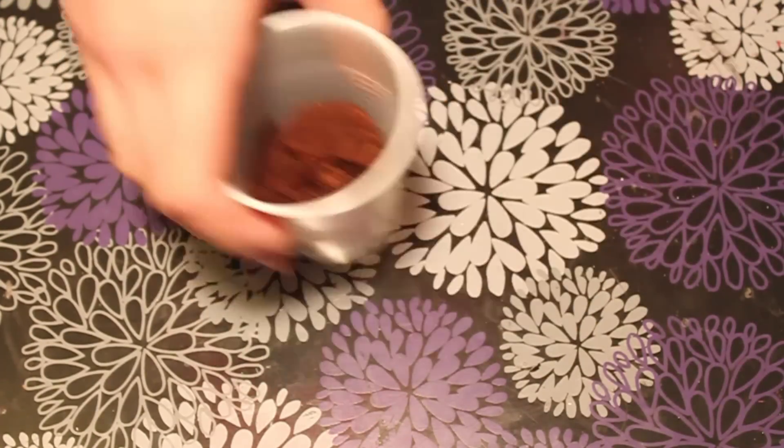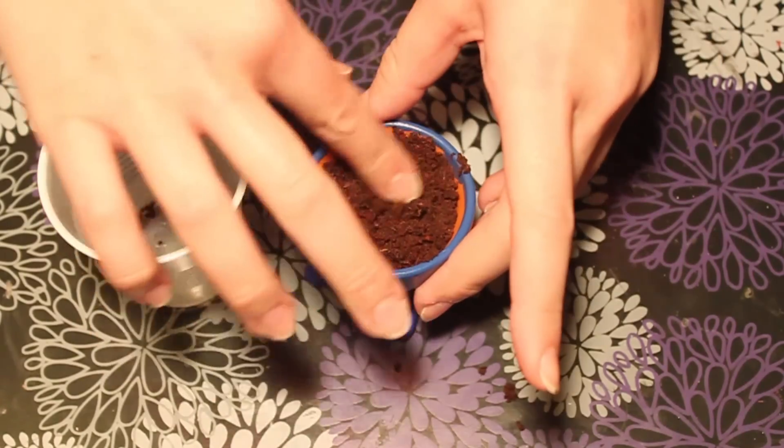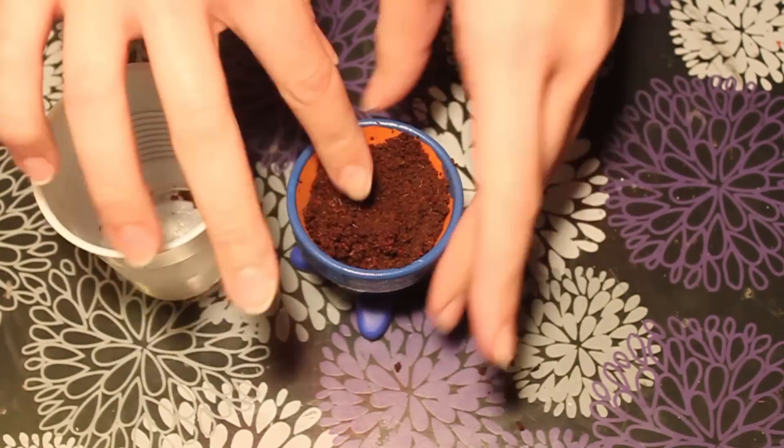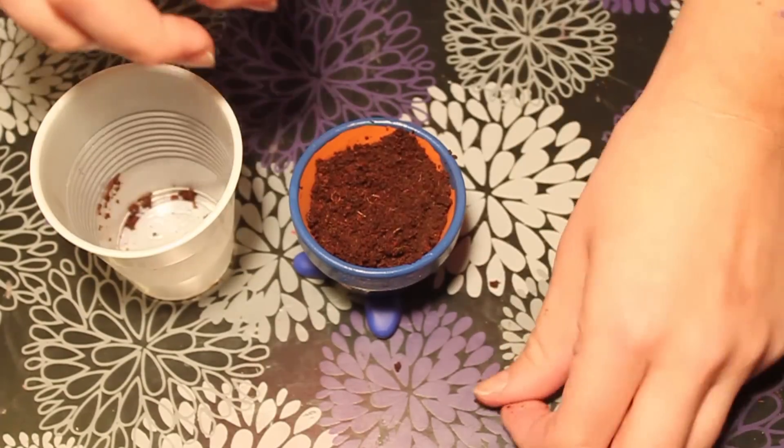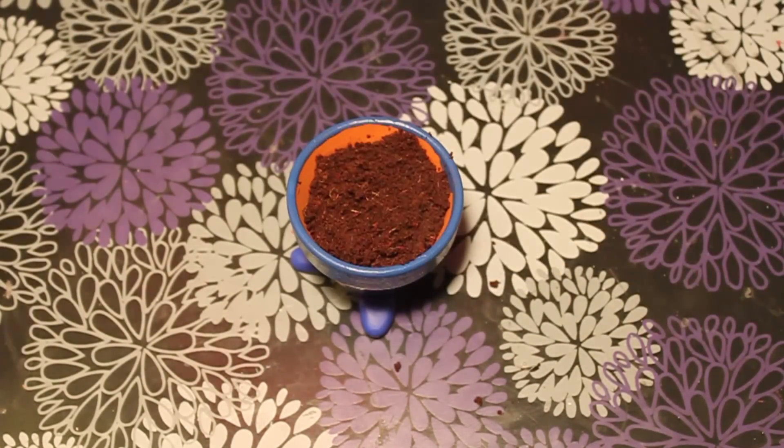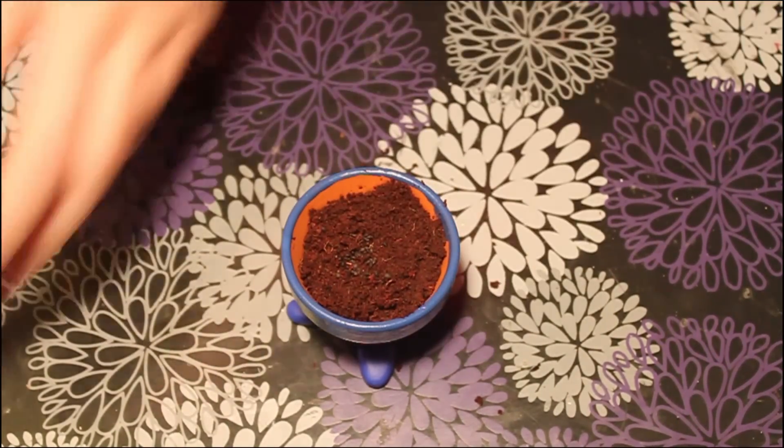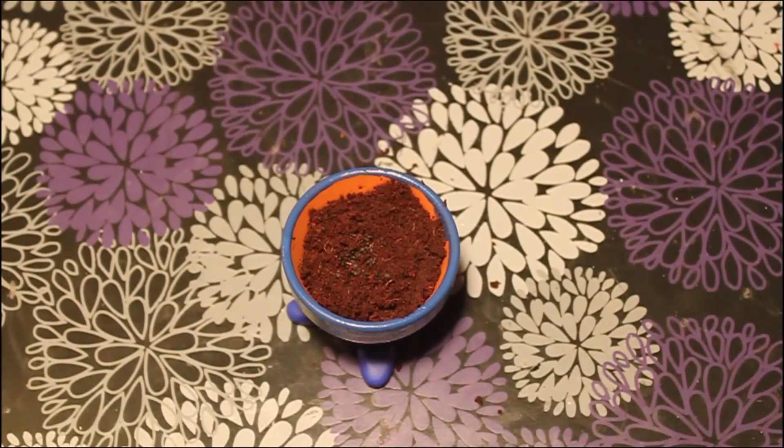And now comes the fun part of planting something in there. Our little kit came with a soil pellet and you just add a little bit of water and it expands. And then it came with some seeds so you can add your seeds. It just said to sprinkle like five or six on top and then plant them.